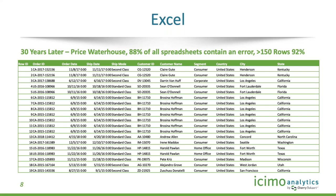This creates two problems. First, as PriceWaterhouseCoopers discovered in a broad survey of all their audit clients, 88% of all spreadsheets contain an error. As that data expands over 150 rows, that moves to 92%. As we expand the volume of data that goes into spreadsheets, we increase the opportunity for errors in that data.